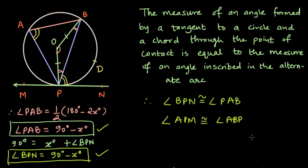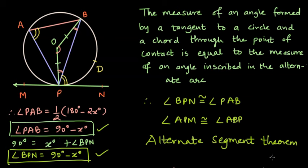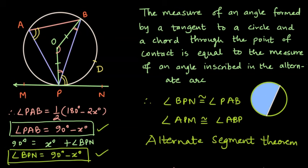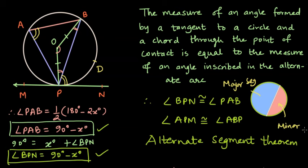What is a segment? If I draw a circle and a chord, one part is a major segment and another is a minor segment. The blue region is the major segment and the pink is the minor segment — and that's why this theorem is called the Alternate Segment Theorem. Don't confuse it with the normal line segment, and this is how we have proved the Alternate Segment Theorem.